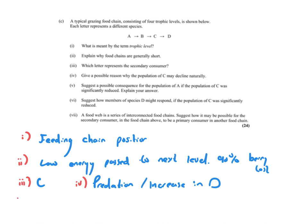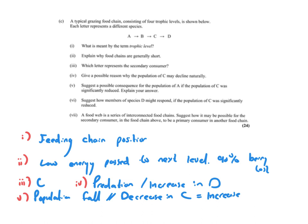If the population of C was significantly reduced, the population of A would likely fall. The reason is that fewer C means less predation on B, so the number of B increases, meaning more of A is consumed and the population of A falls. In terms of how species D might respond if C was significantly reduced: D might migrate to find another food source, or switch to alternative prey to obtain its energy.